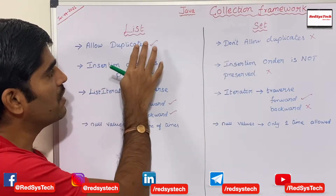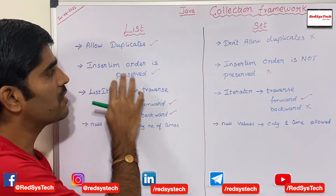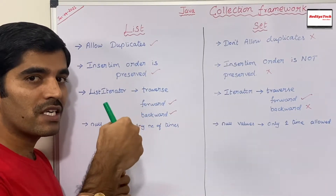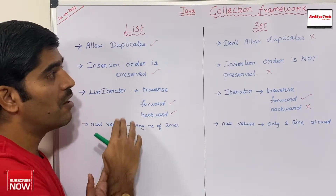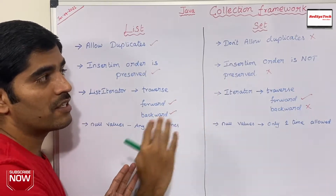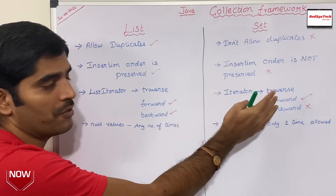In terms of List, the insertion order is preserved — the way you insert the data is maintained. But in case of Set, the insertion order is not preserved.